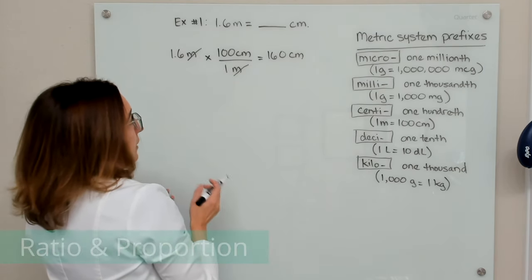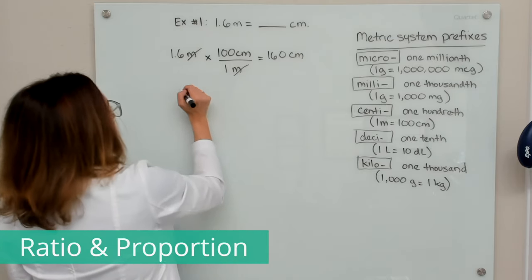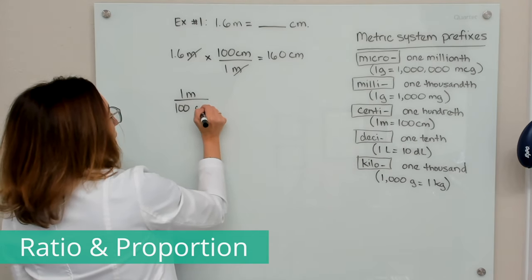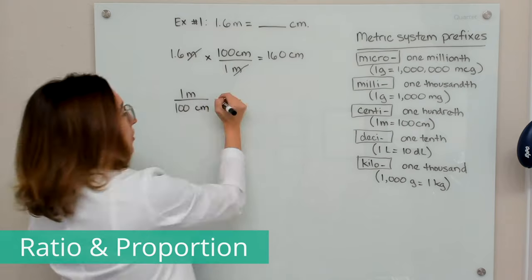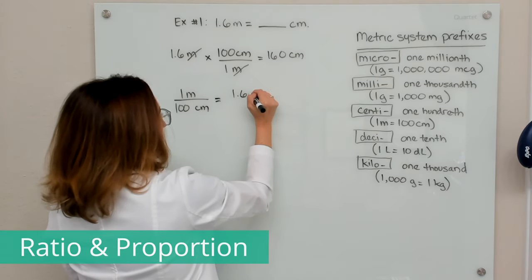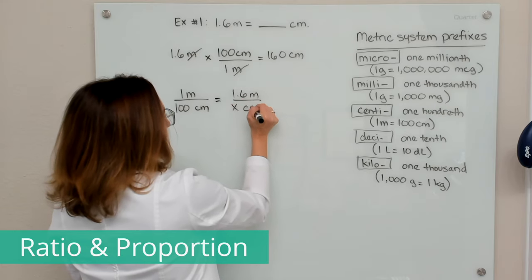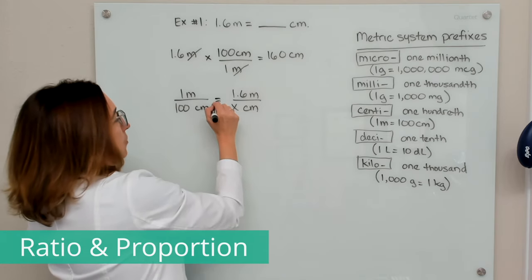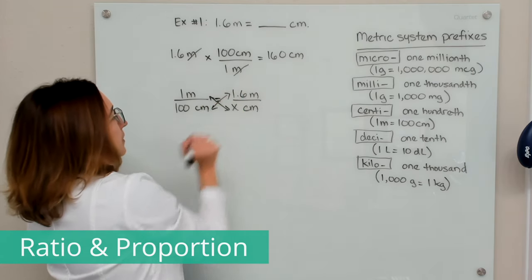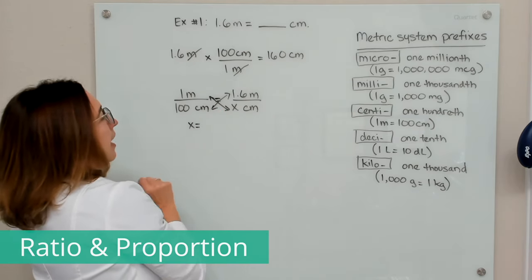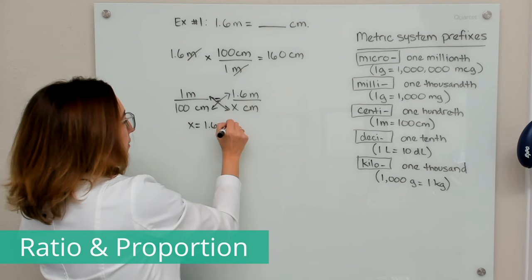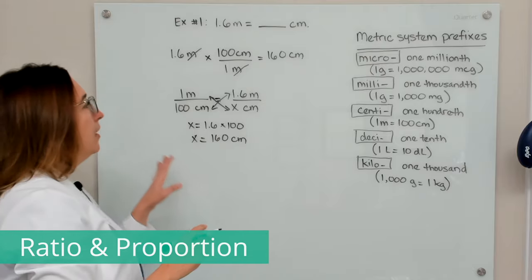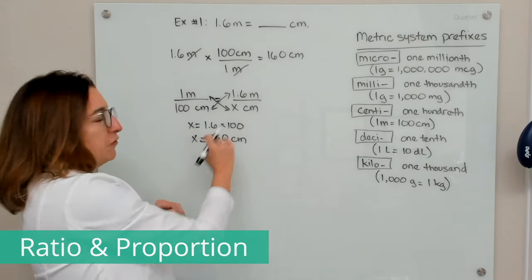Let's now solve this with ratio and proportion. The known ratio is that one meter equals 100 centimeters. We want to know: for 1.6 meters, how many centimeters is that? That's our unknown value. Next, we're going to cross multiply. X times 1 is just x, and 1.6 times 100 gives us 160 centimeters. We end up with the same answer, though it took a few more steps.